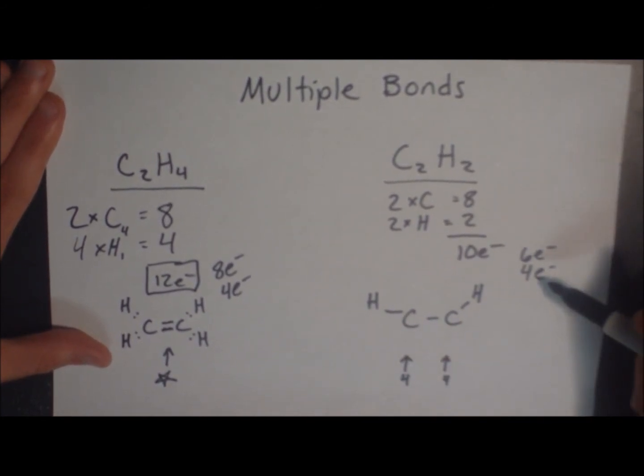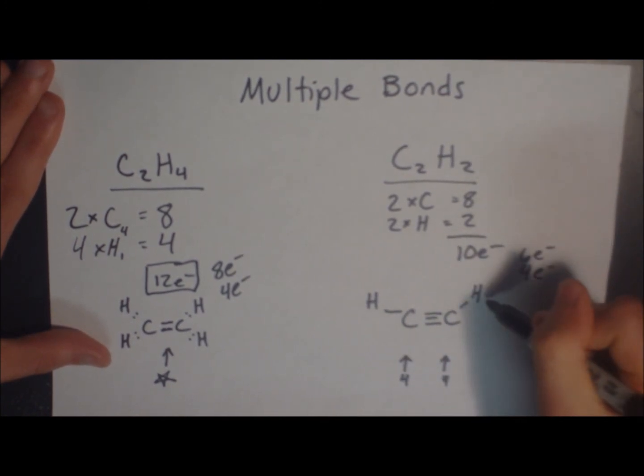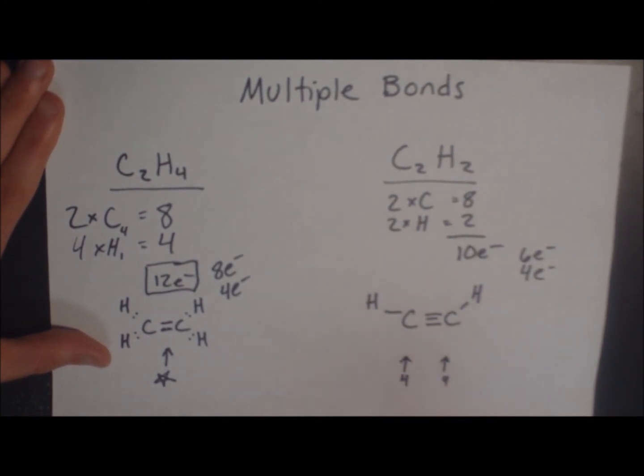So now, since we only have 4 more electrons to play with, to get our octet rule, to satisfy the octet rule for both carbons, we're going to add 2 more bonds. Octet rule satisfied, octet rule satisfied, hydrogen only has 2, hydrogen only has 2.